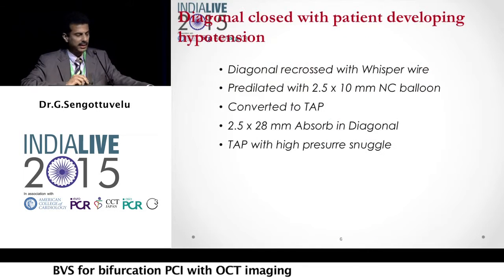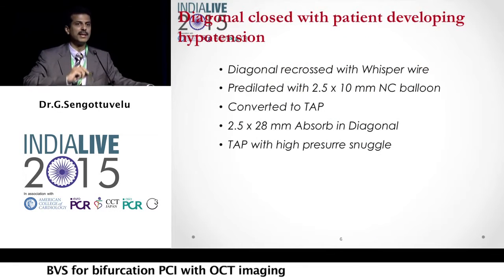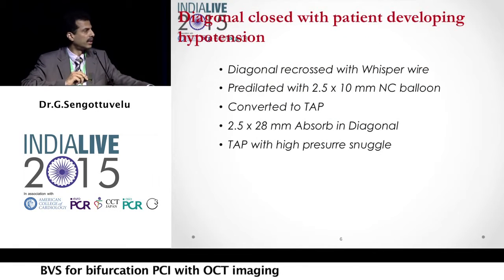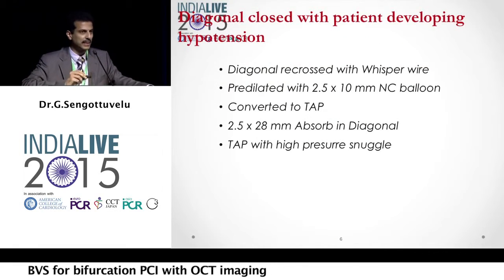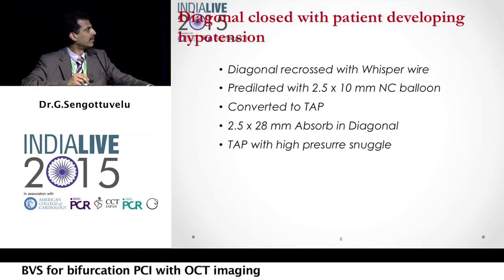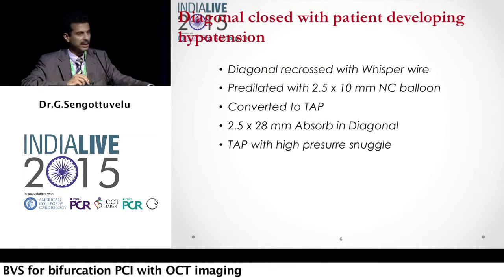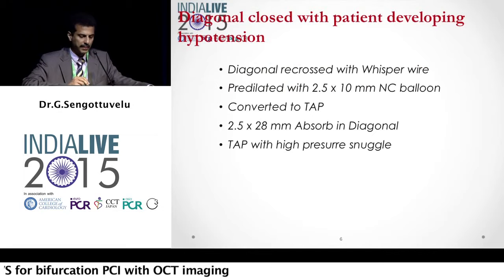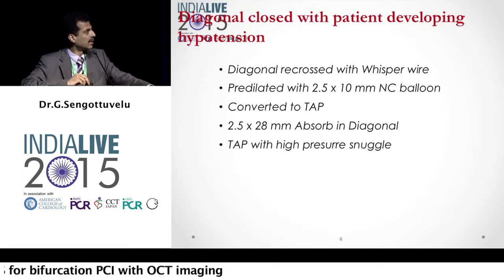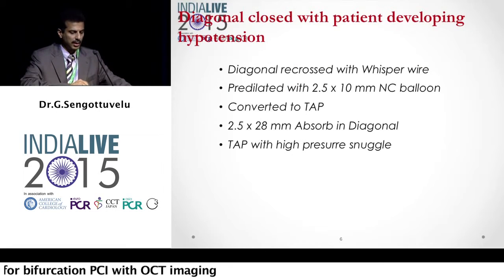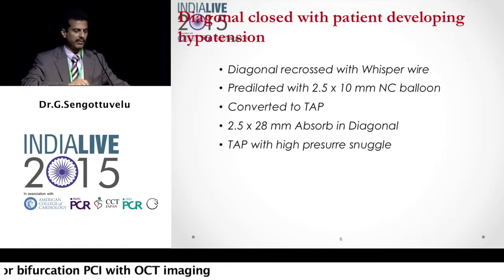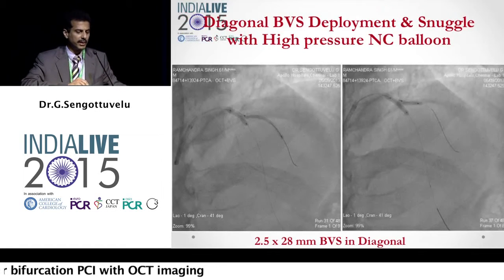We gradually inflated to 10 to 12 atmospheres, then increased up in size to a 2.5-millimeter non-compliant balloon. We then converted to a TAP technique to use another absorb — a 2.5 to 28-millimeter scaffold.